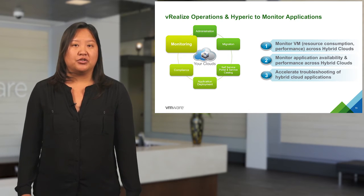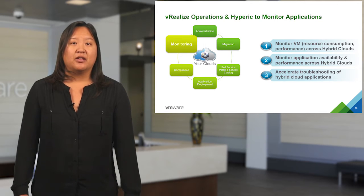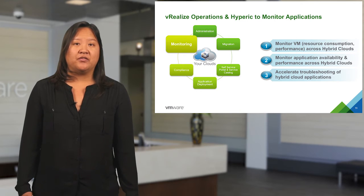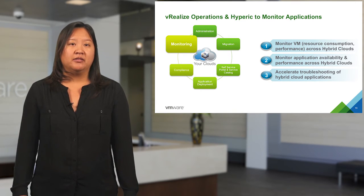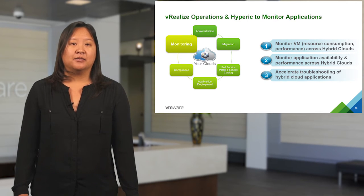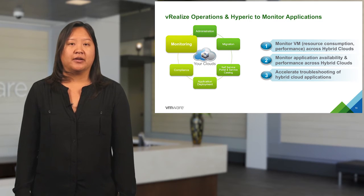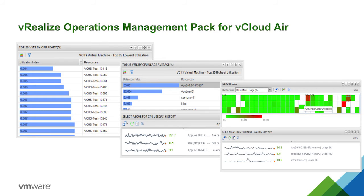vRealize Operations is a set of solutions for managing and monitoring your data center. It has three distinct capabilities for managing vCloud Air: infrastructure monitoring, OS middleware and app monitoring, and compliance. With the vRealize Operations Management Pack for vCloud Air, you can gather metrics from vCloud Air and present them to the vRealize Operations centralized monitoring tool. The management pack includes out-of-the-box dashboards for VM performance, utilization, as well as heat maps. Using vRealize Operations also improves the ability to troubleshoot issues across both on-prem and vCloud Air — great for applications distributed across both locations.